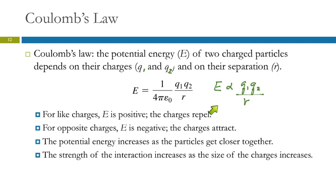If R is smaller, the potential energy is larger. You can observe this with a magnet on your refrigerator: stick the magnet on the fridge and it holds fine. Keep adding pieces of paper between the magnet and the fridge — that increases R — and at some point the magnet won't hold the paper anymore. How many pieces of paper it can hold depends on how strong the magnet is. If the charges are larger, the force of attraction is greater; if the charges are smaller, the force is weaker.